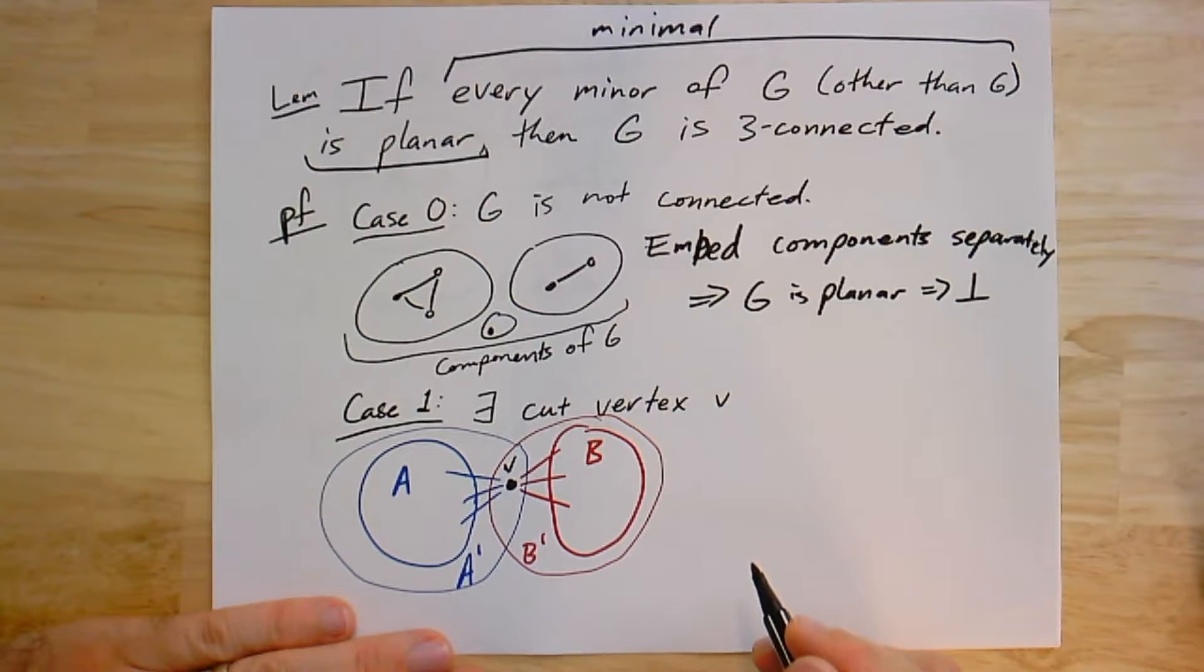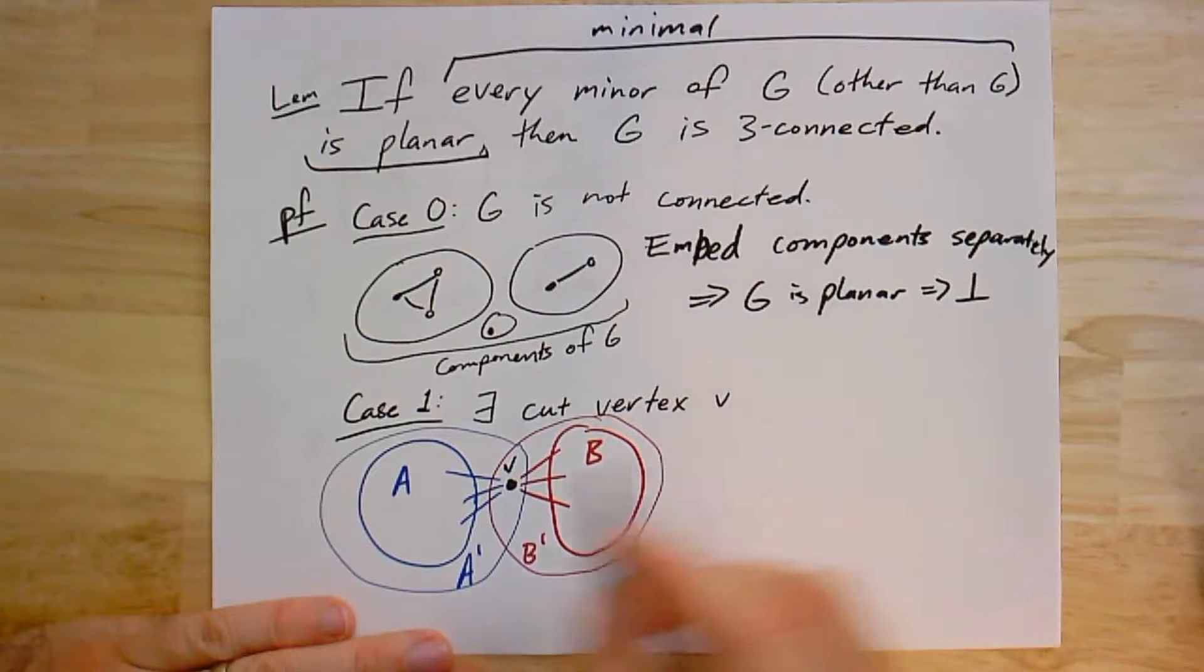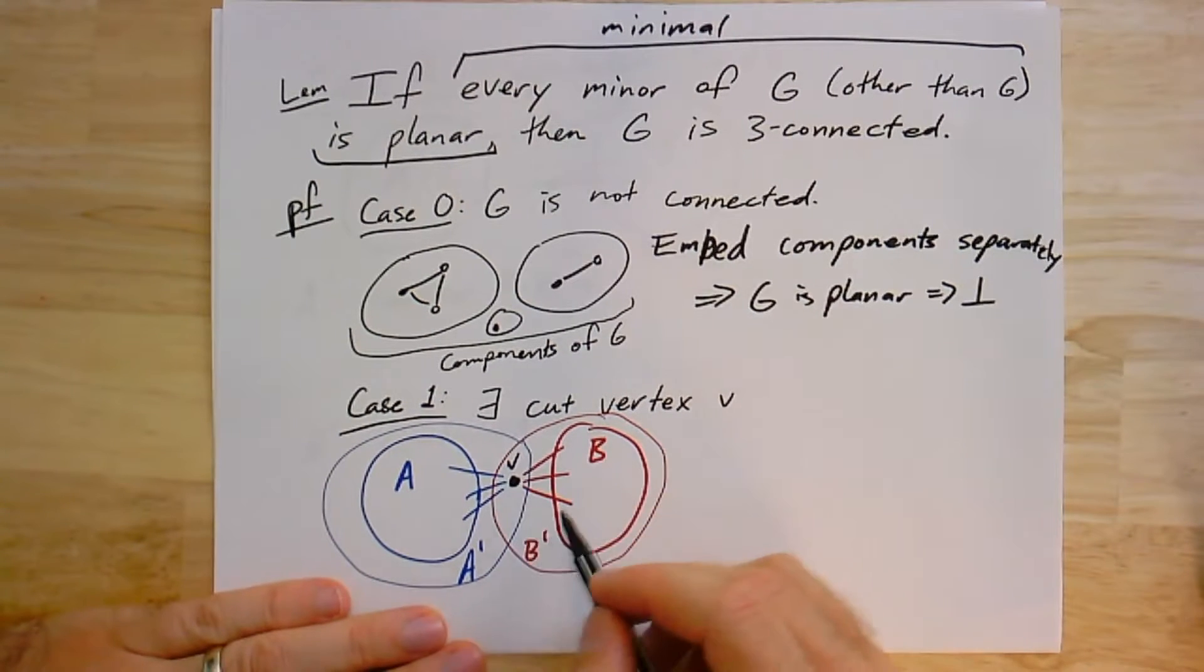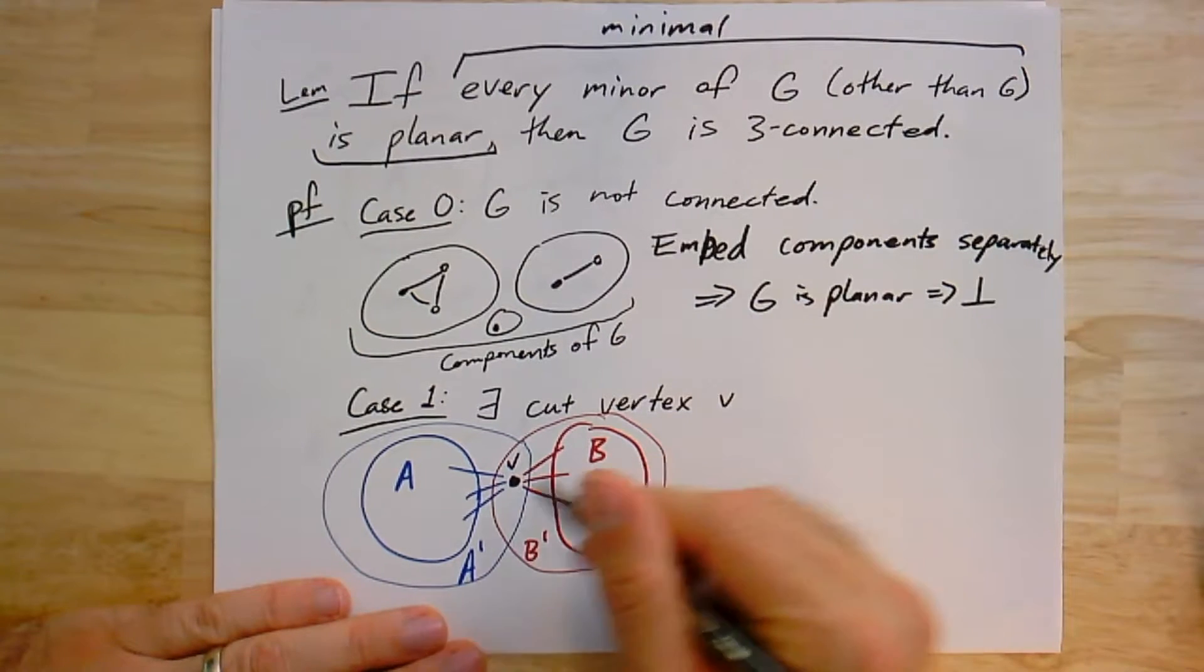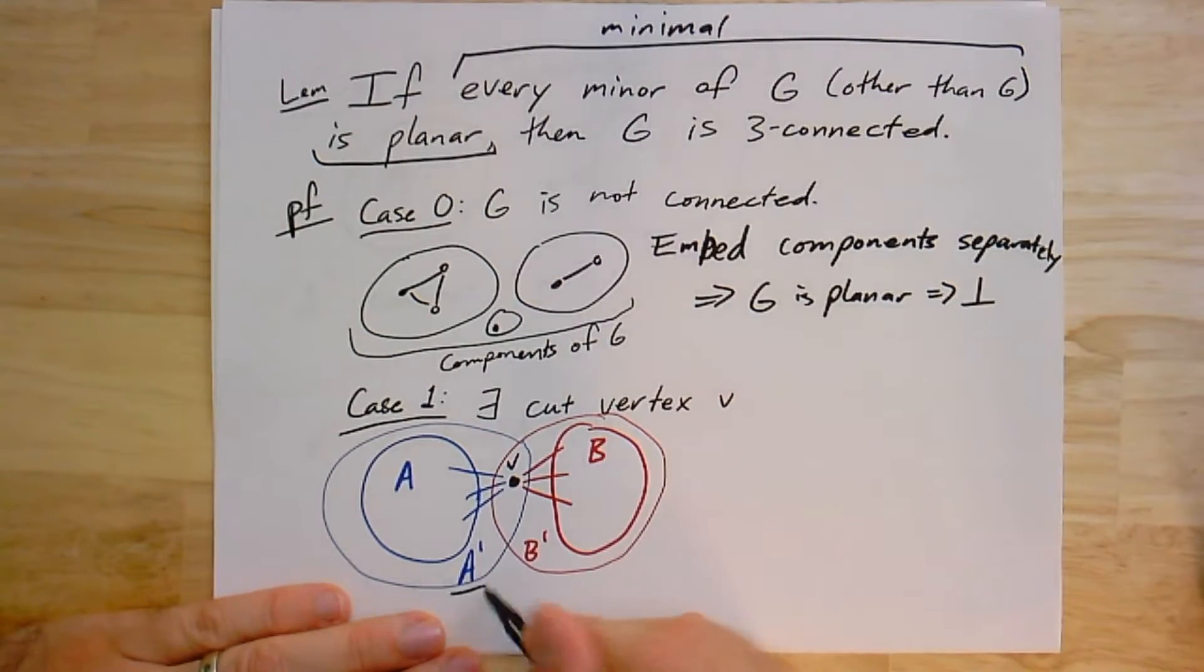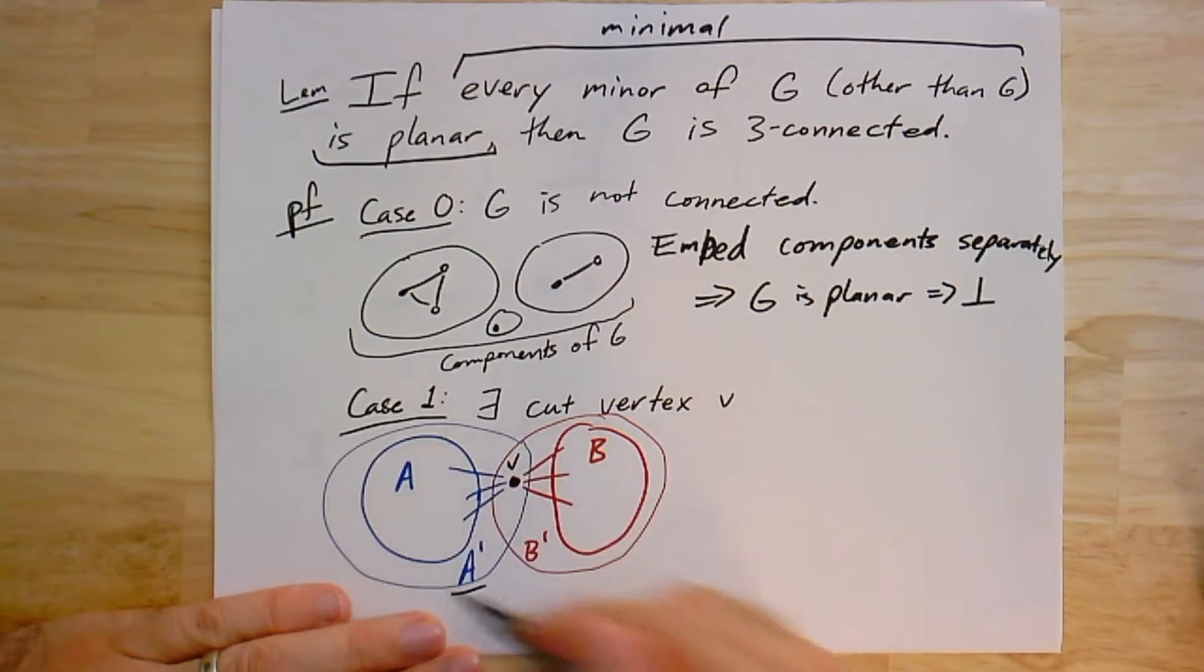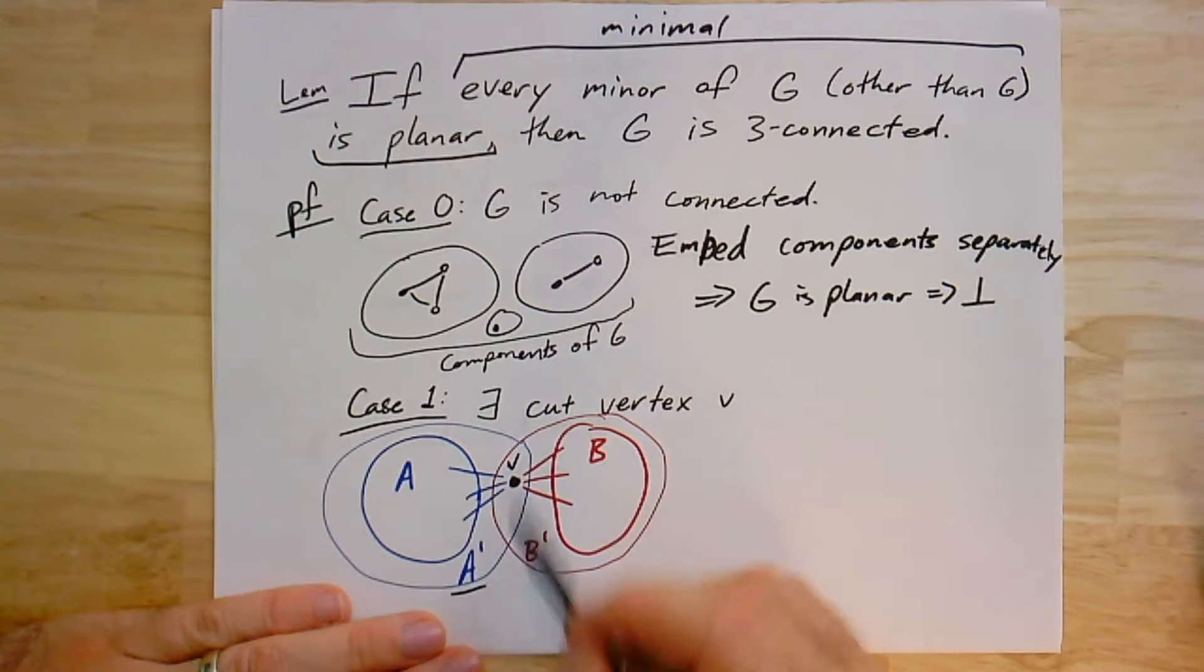The next case is maybe it's connected, but it's not two connected. So there's some single cut vertex. The proof for this case is pretty much identical to the next case, but we'll do it in two steps so you can see this idea in action. What we'll do is take this graph, contract all of B to the one vertex V. So that will give us a minor A prime. I've labeled it here. And I can do the same to B, where I take B and I contract all of A to the vertex V and I get B prime.